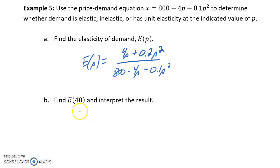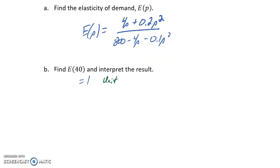Evaluating at E(40) gives us a result of 1, which means our demand is unit. To interpret that, at a price point of $40 for this item, our demand is unit.